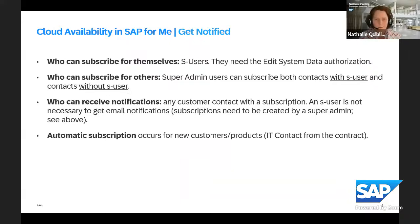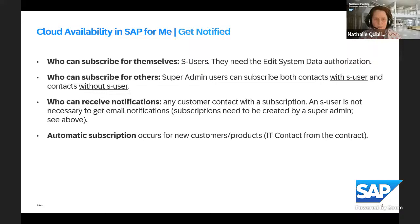To use this tool, you need an S-user to access SAP for Me. With an S-user, you can create a subscription for yourself, provided you have the 'Edit System Data' authorization from your IT department. Super admins can subscribe for themselves and also for others — including contacts with or without an S-user. Any customer contact can receive notifications as long as they have a subscription. If they don't have an S-user, a super admin must create the subscription for them.